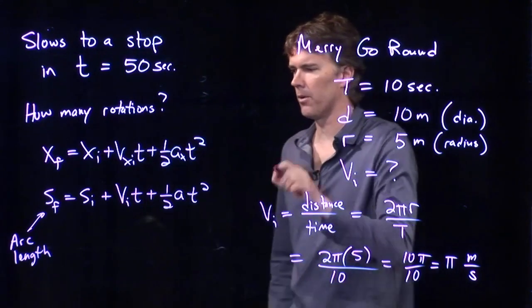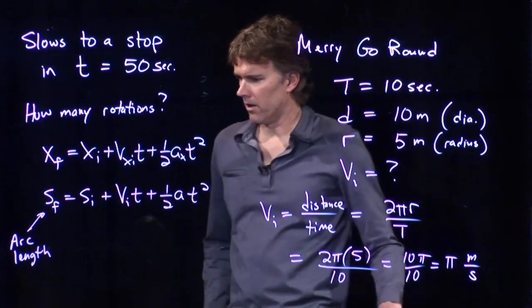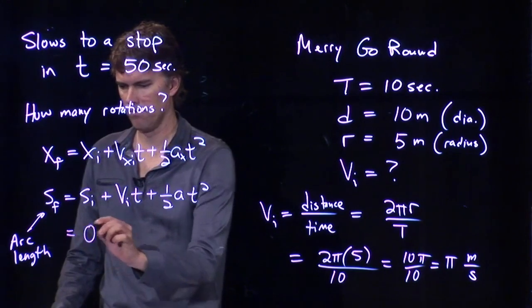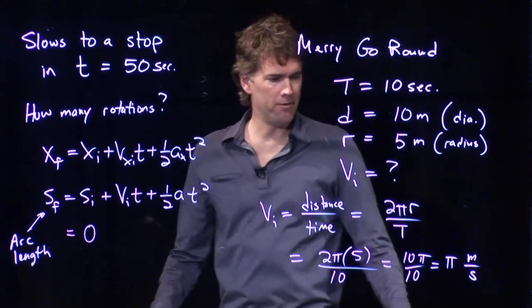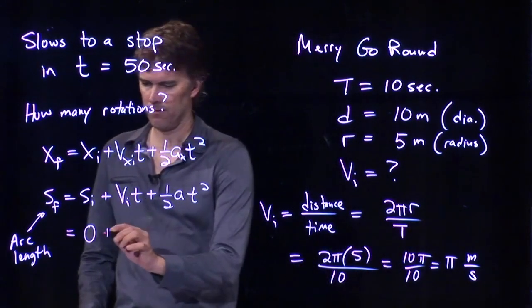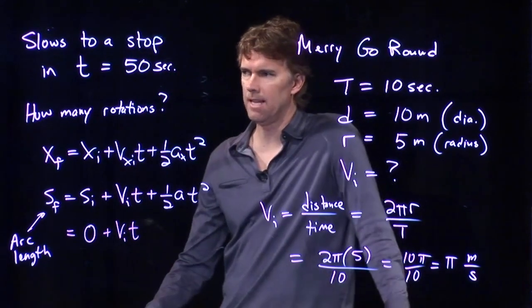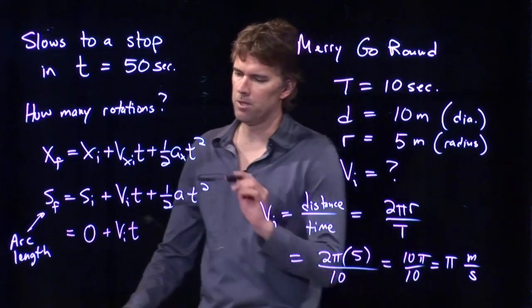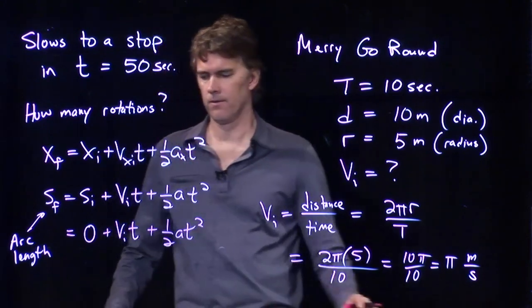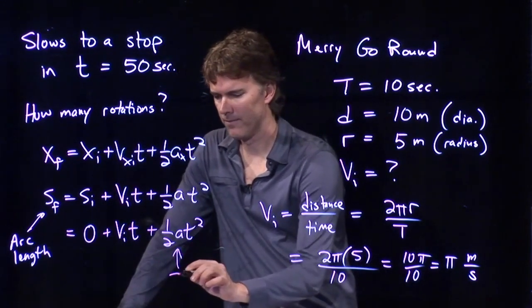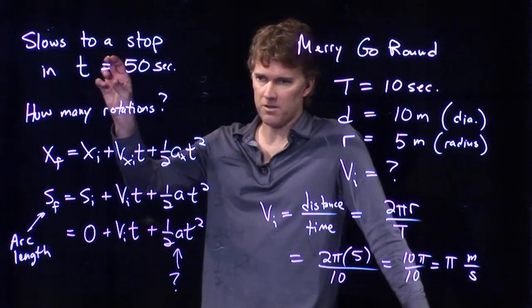All right, what do we know here? Well, we can measure from where we started, and so we say that's zero. The initial, we already have that. We also know t, time, but we don't know a. And we don't know this number right here.